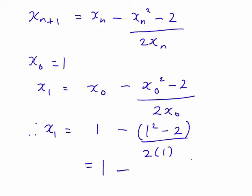What happens then? 1 stays there. This becomes 1 - (-1)/2. So, 1 - (-1/2), which is just 1 + 1/2.